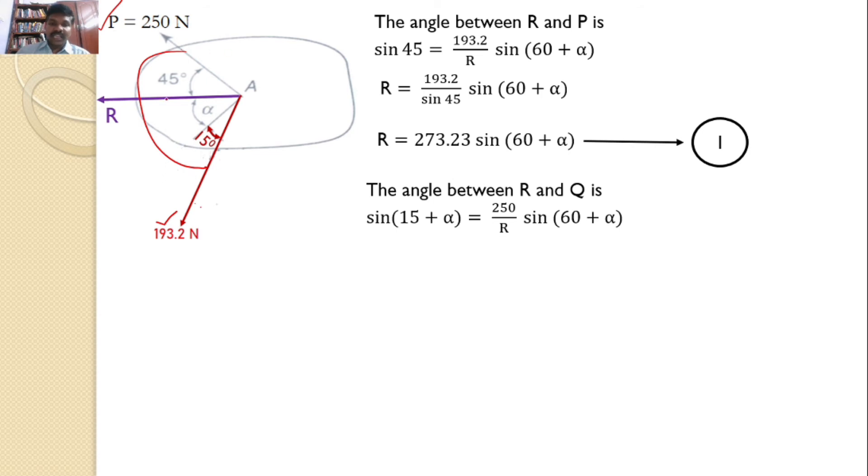Now, I will take the other equation. I know that the angle between R and this 193.2 is sin 15 plus alpha. So, I can say that sin 15 plus alpha equals P by R that is 250 by R into sin 60 plus alpha.